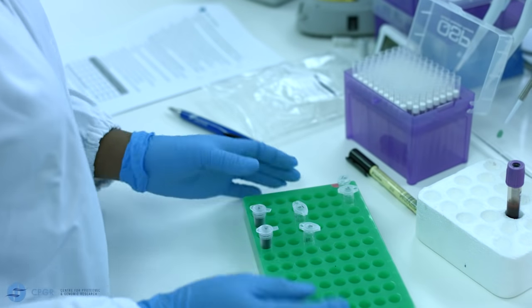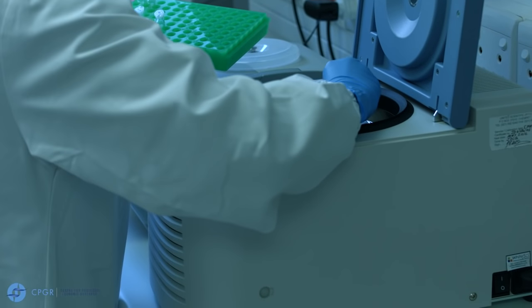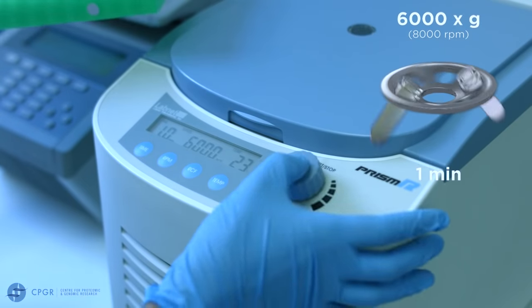Close the spin column and centrifuge at 6000 g, that's about 8000 rpm, for one minute.